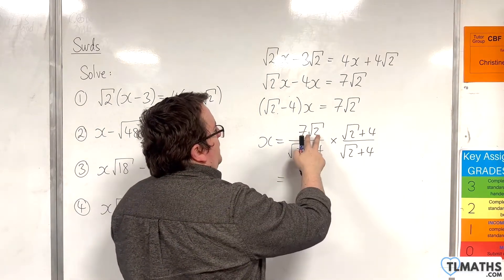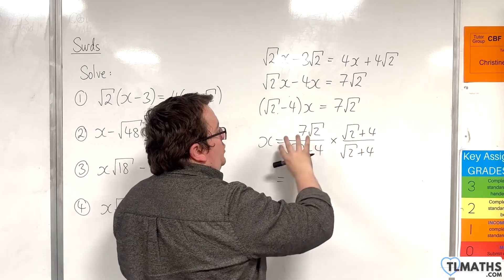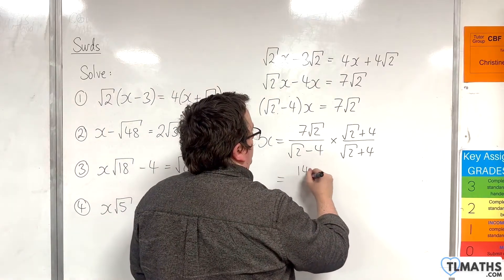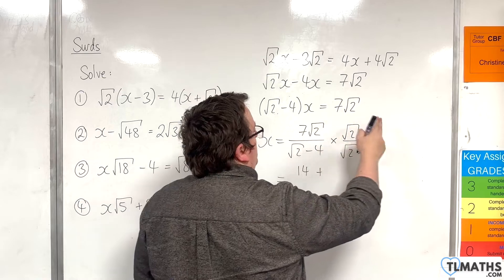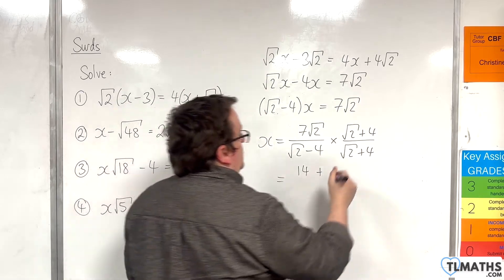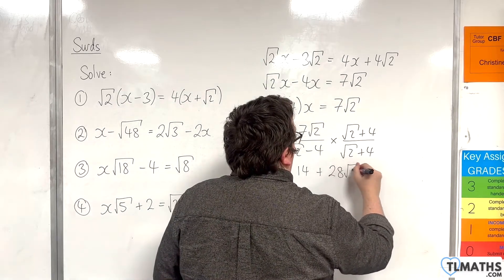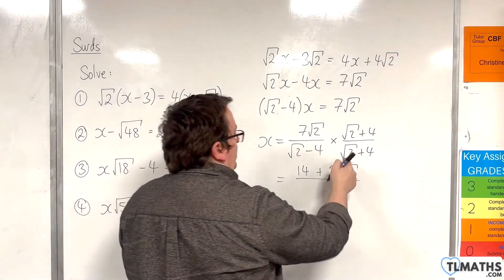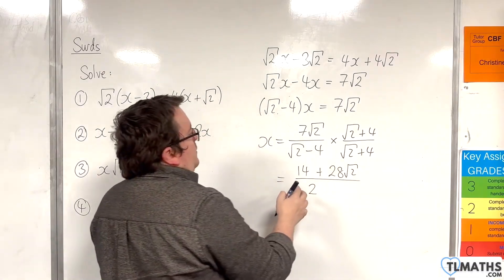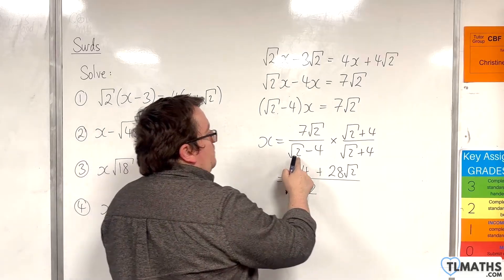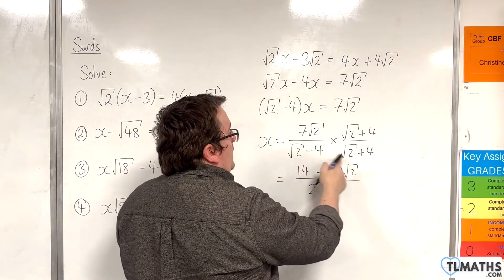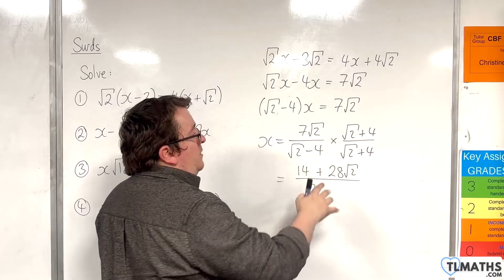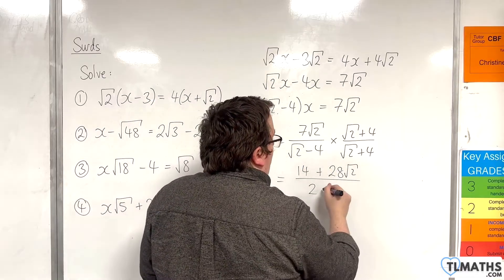So we'll have 7 root 2 times by root 2, which is 7 times 2, so 14. And then we've got 7 root 2 times by 4, which is 28 root 2. In the denominator we're going to have root 2 times root 2, so 2. And then root 2 times 4 and minus 4 times root 2, they're gone. Minus 4 times 4 is minus 16.